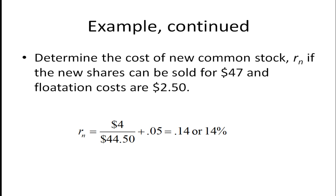Now let's determine the cost of new common stock, Rn. If the new shares can be sold for $47 instead of $50, and the flotation costs are $2.50, we're going to have that same $4 dividend, but instead of dividing by $50, we divide by $47 minus the $2.50 flotation costs, or $44.50, plus that growth rate of dividends of 5%. It turns out to cost us 14% instead of 13%. So you can see that because of the underpricing and the flotation costs, issuing new shares can be more expensive than financing new projects internally using existing equity in the firm.